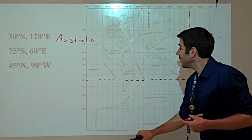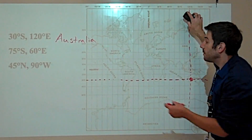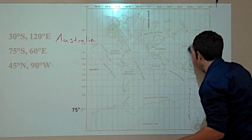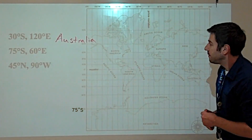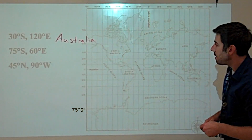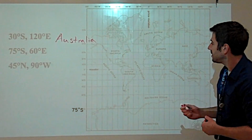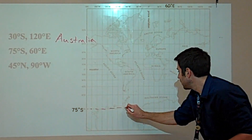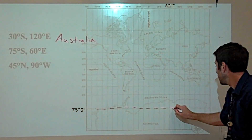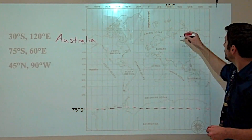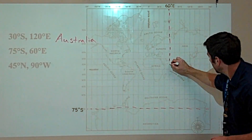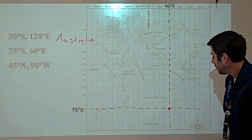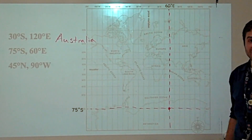75 degrees south, 60 degrees east. Here's where 75 degrees south is. 60 degrees east is there. They intersect in what is Antarctica.